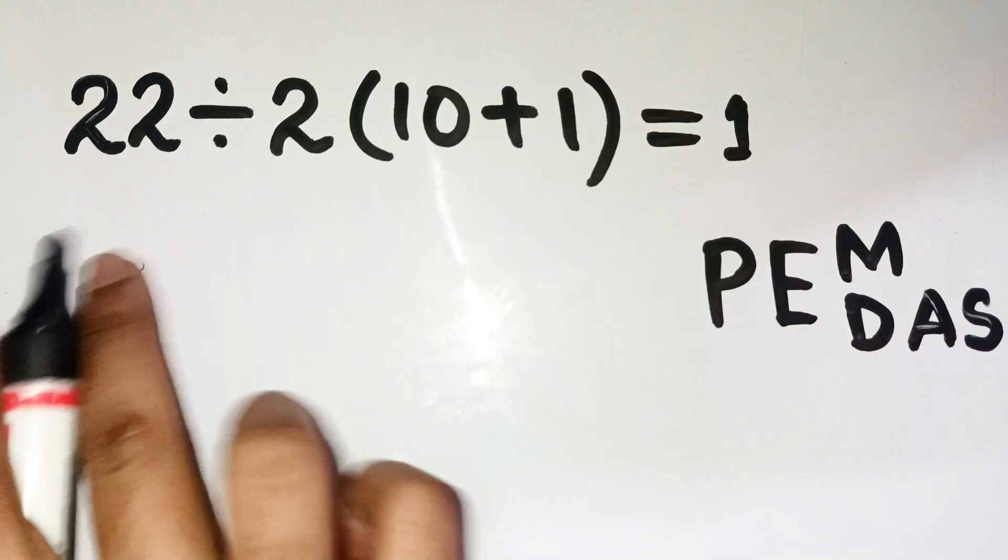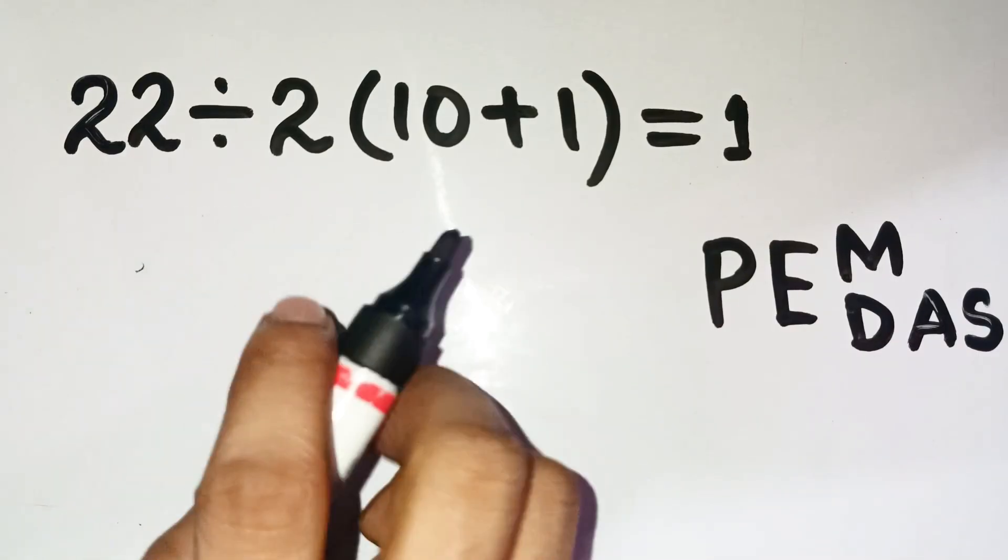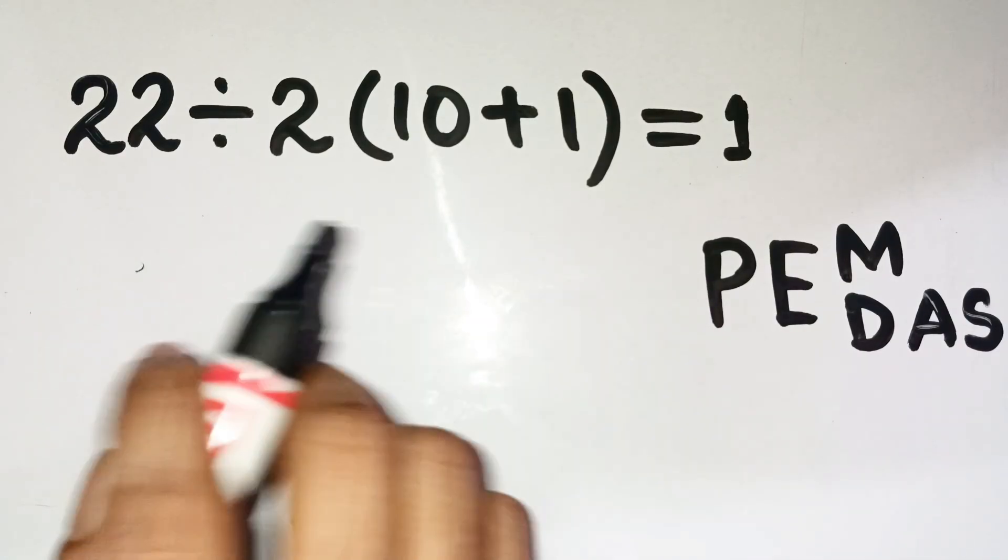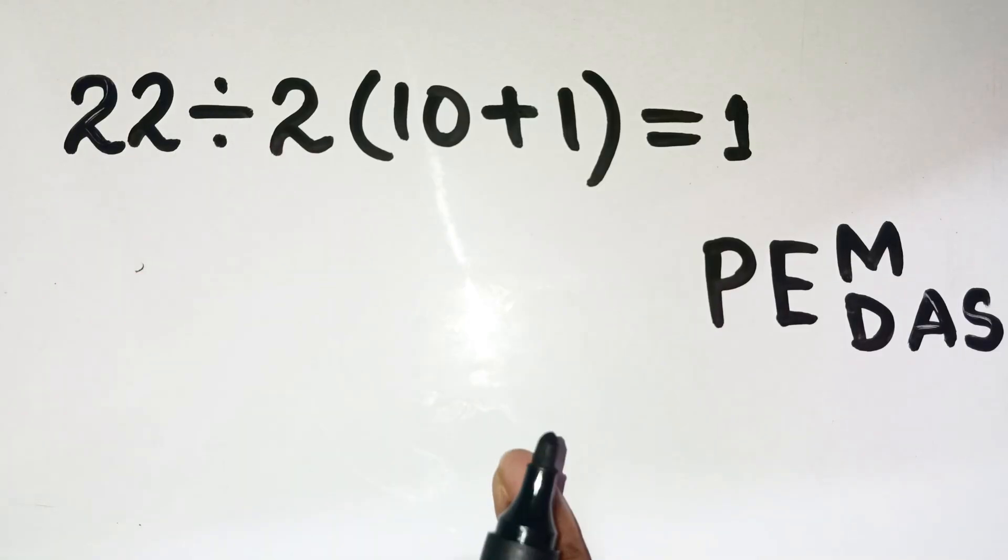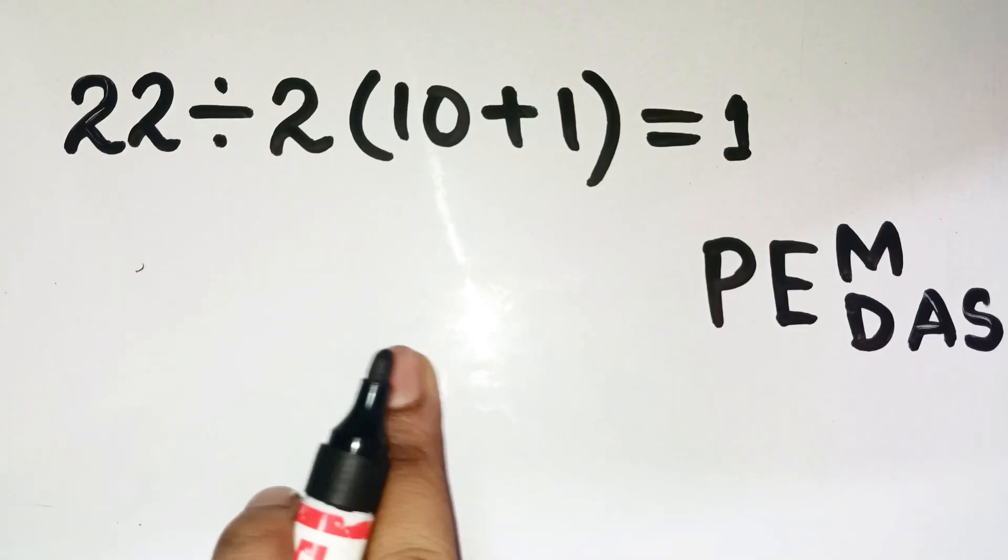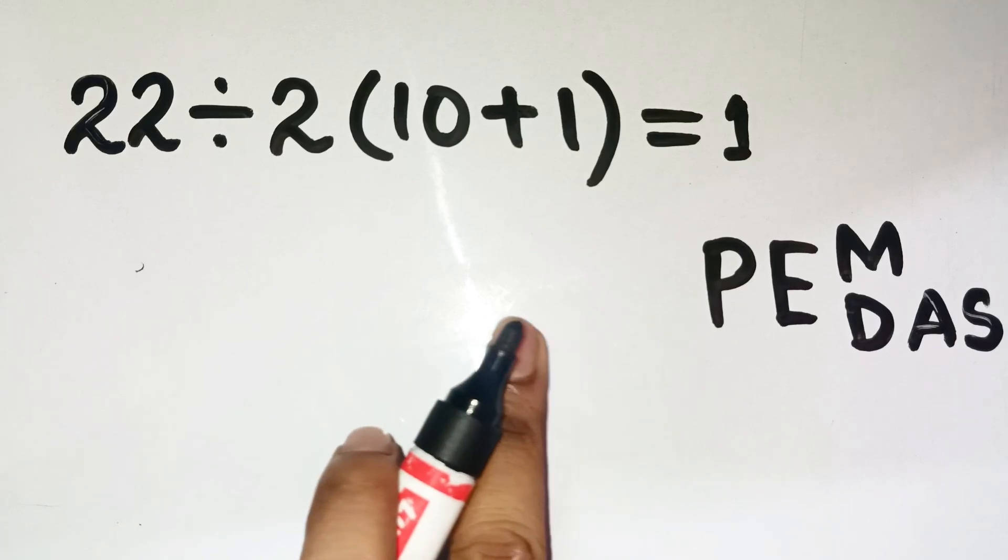Seems clean, right? Well, not quite. That's the trap. It looks simple, but this one hides one of the most common math misconceptions: how division and multiplication actually share equal priority.